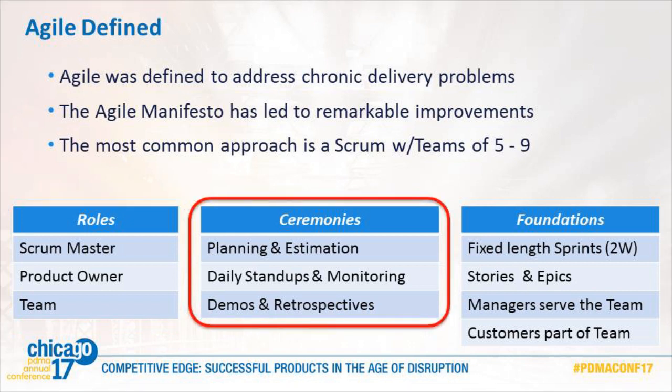There are some key ceremonies. The first, at the beginning of a sprint — which is typically two weeks — is planning and estimation, and there are a bunch of best practices for doing that. In the middle are daily stand-ups and monitoring, which typically consists of plotting story points, or basically the amount of functionality delivered during that sprint. At the end of sprints there are demos and retrospectives. This is going to be key for tangible products, because unlike software, you can't release a tangible product every two weeks — it's totally impractical. We'll talk about demos and how you get by with different kinds of creative prototyping.